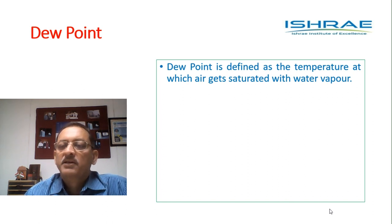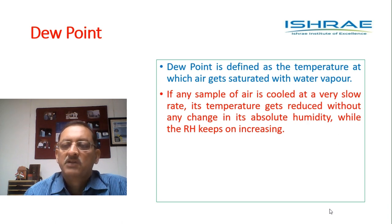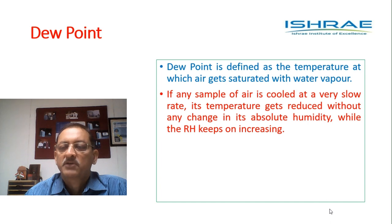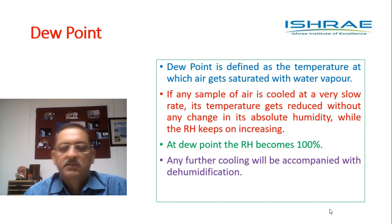Dew point is defined as the temperature at which the air gets saturated with water vapor. If we start with any sample of air and cool it very slowly, the temperature gets reduced without any change in absolute humidity — that means moisture does not come out, dehumidification does not take place. In this process, as temperature reduces without dehumidification, the relative humidity keeps increasing until it reaches 100%, at which point any further cooling will lead to condensation.